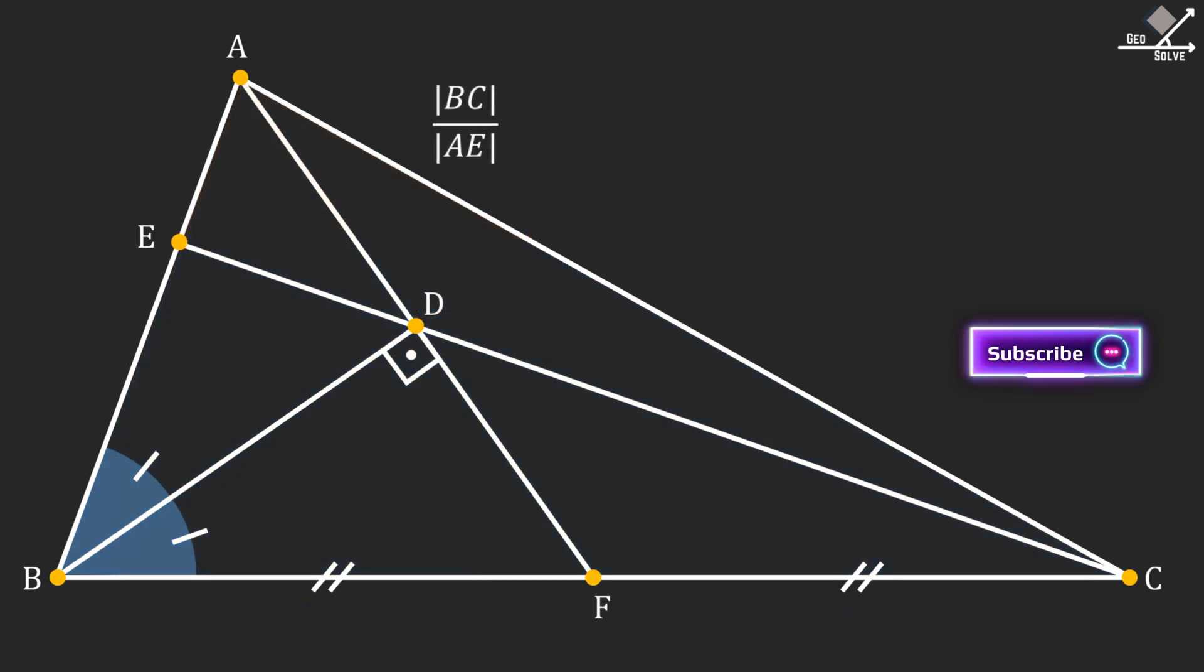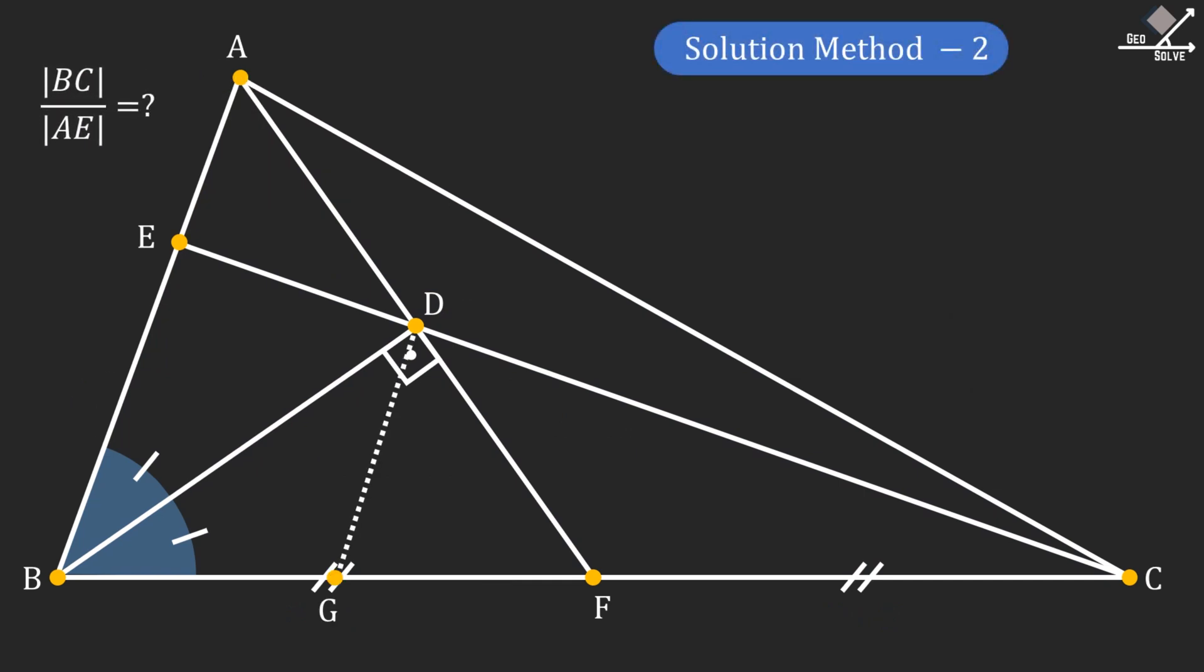Now let's start the alternative solution method. First, just connect point D and midpoint of line segment BF. From midpoint theorem on right-angled triangles, these three line segments will be equal. And so the length of the line segment FC will be 2X.